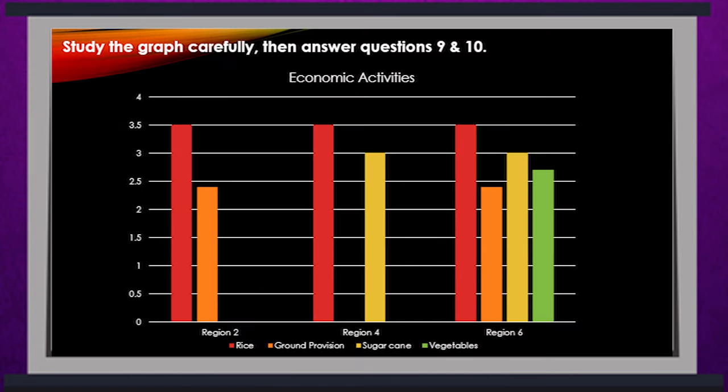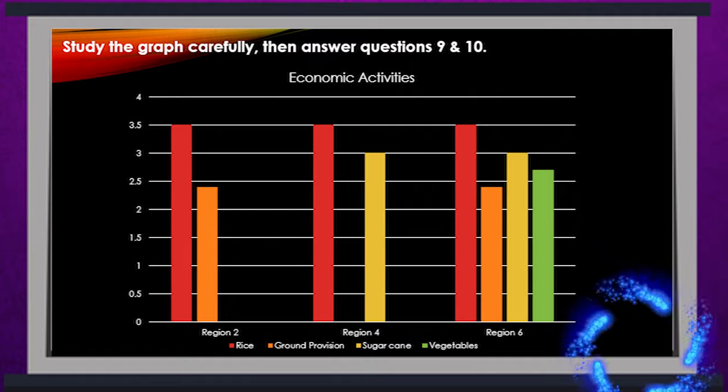Questions 9 and 10: study the graph carefully then answer questions 9 and 10. Boys and girls, you have to study this graph — it says economic activities. As you look at this graph, you will see that there are the names of 3 of our administrative regions: Region 2, Region 4, and Region 6. At the bottom of the graph, study the information there, because that will help you to answer questions 9 and 10. Look at the graph very carefully and all the details provided.